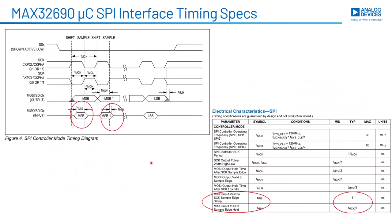On the controller side of things, it's very similar. The data coming from the target device into the controller has a setup time of five nanoseconds and a hold time. This is interesting — the hold time is expressed in terms of the master clock frequency of the device. A similar timing diagram shows setup time and hold time. When connecting one device to another, all timing requirements for both devices have to be simultaneously met.